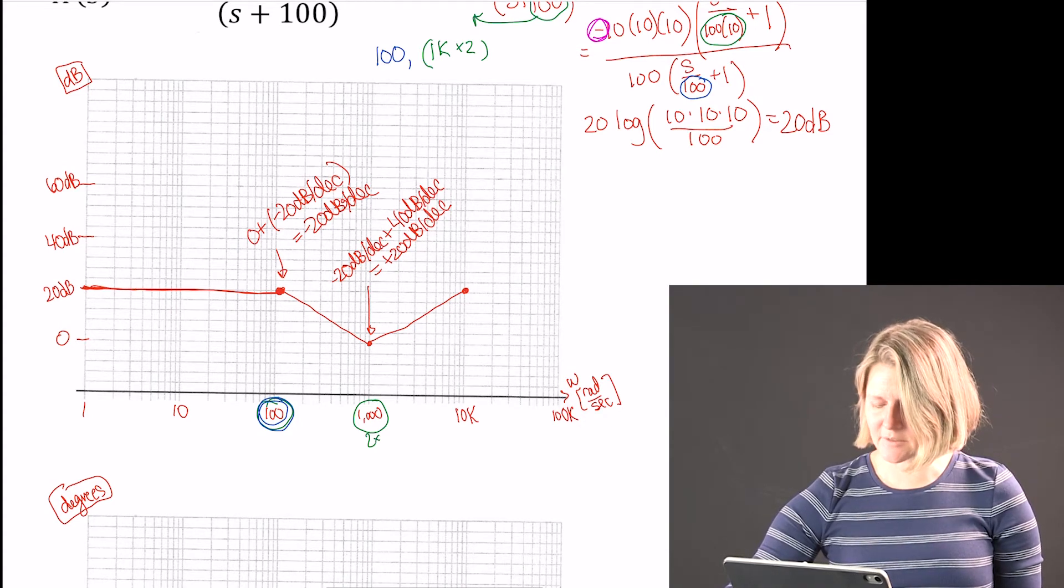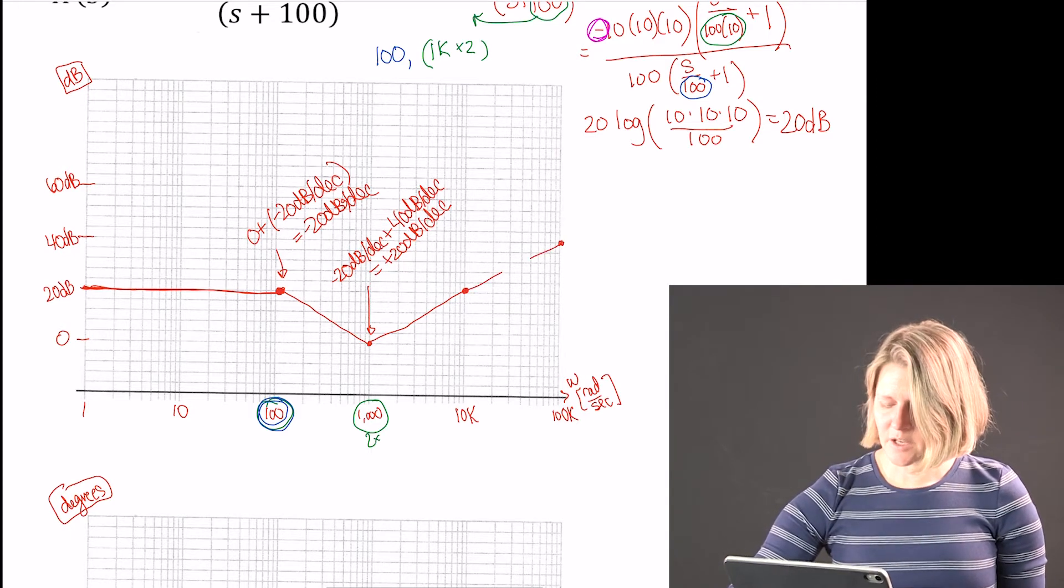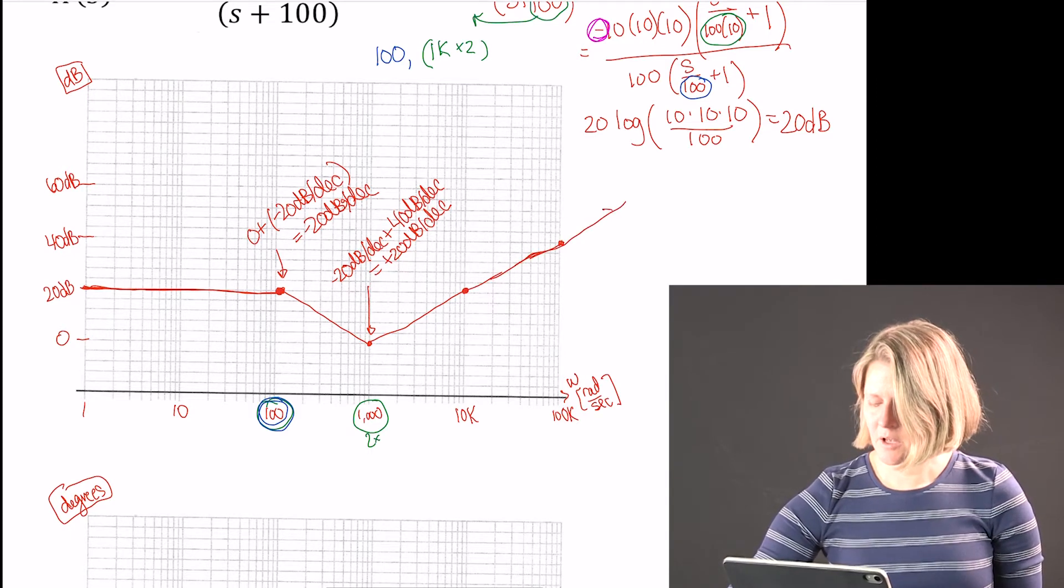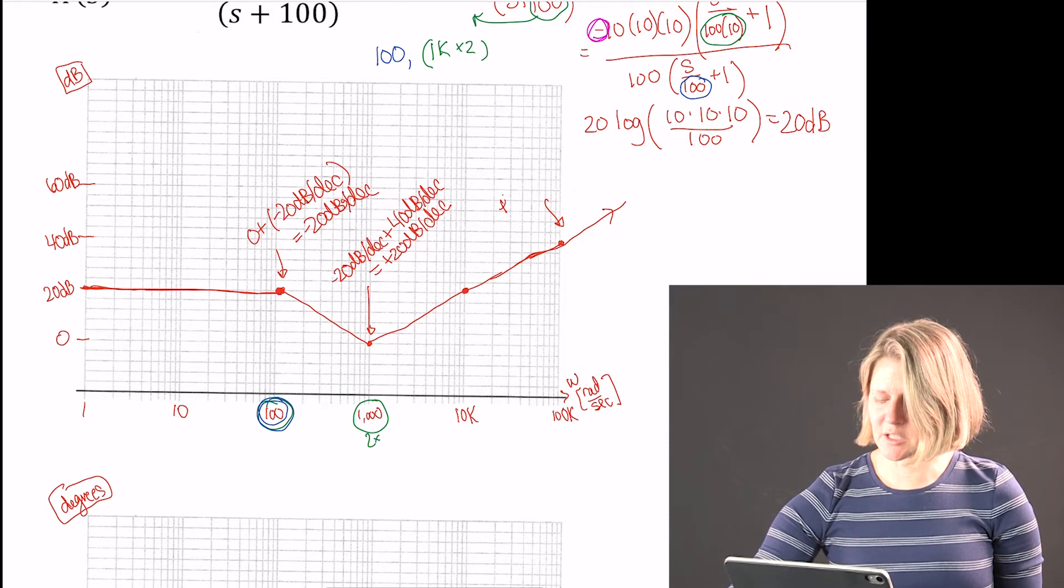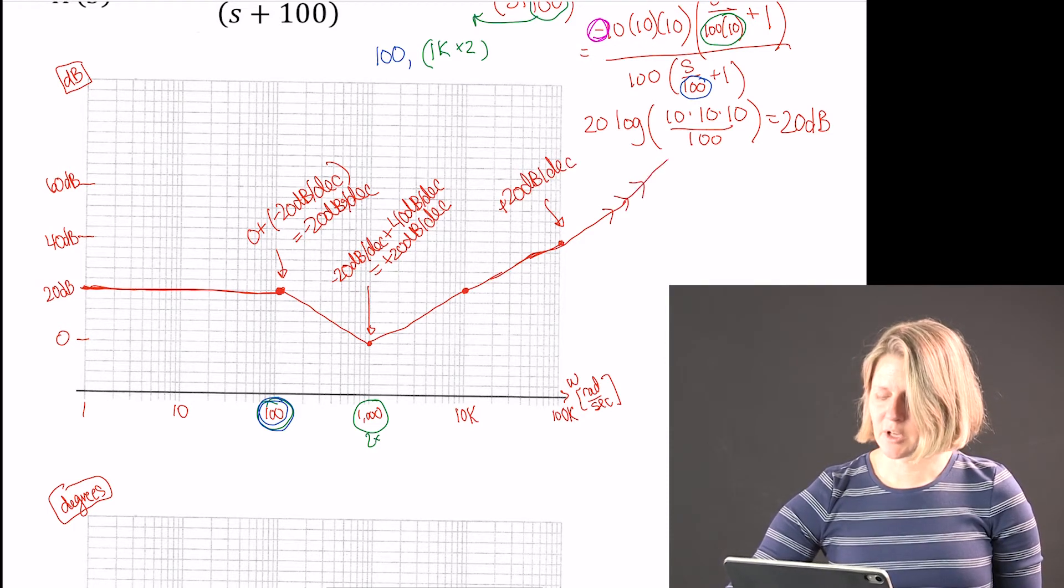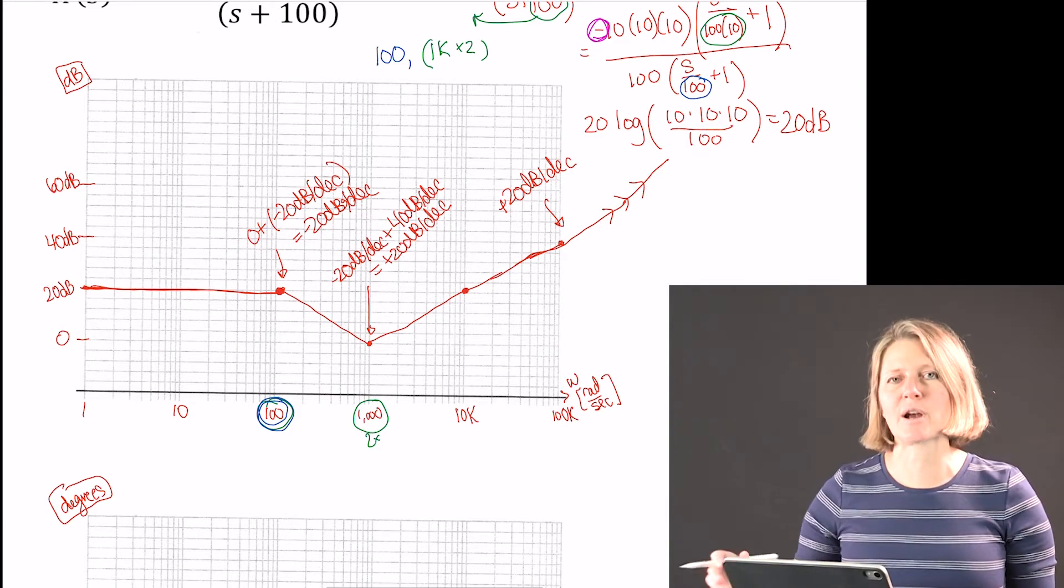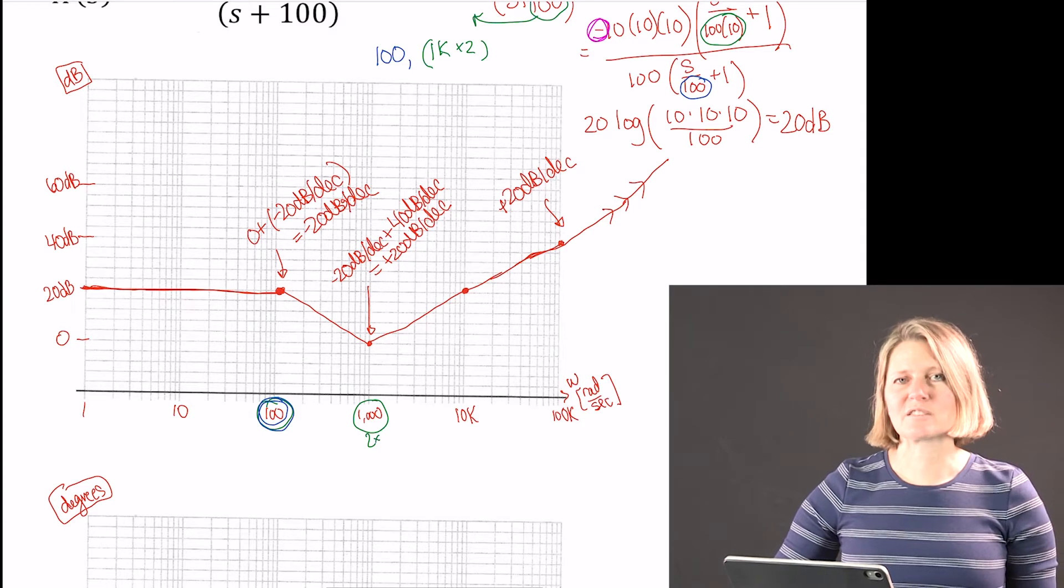So from 1000 to 10k it's going to change by 20. So that will go up from zero to 20, and then one more decade gives us to 40. And then it will keep going at that plus 20 dB slope forever. So it just keeps growing at that slope. At any point after this graph we can still figure out what the value is at specific locations.